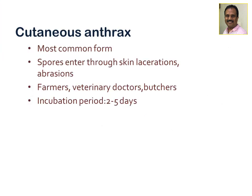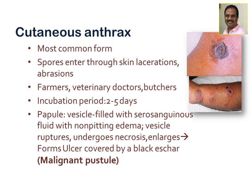Cutaneous anthrax is the most common form. Spores enter through skin lacerations or abrasions, and farmers, veterinary doctors, and butchers are commonly susceptible. After an incubation period of 2 to 5 days, a papule appears, which converts to a vesicle filled with serosanguineous fluid with non-pitting edema. The vesicle ruptures, undergoes necrosis, enlarges, and forms an ulcer covered by a black eschar — visible in photographs — known as a malignant pustule.